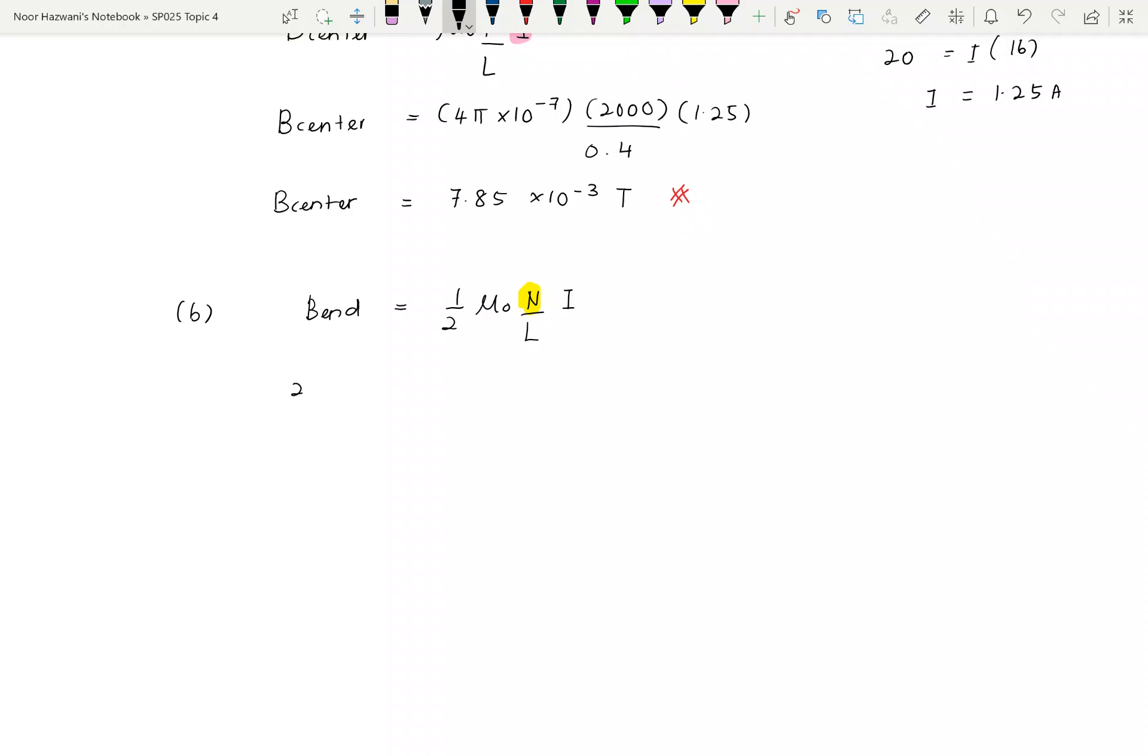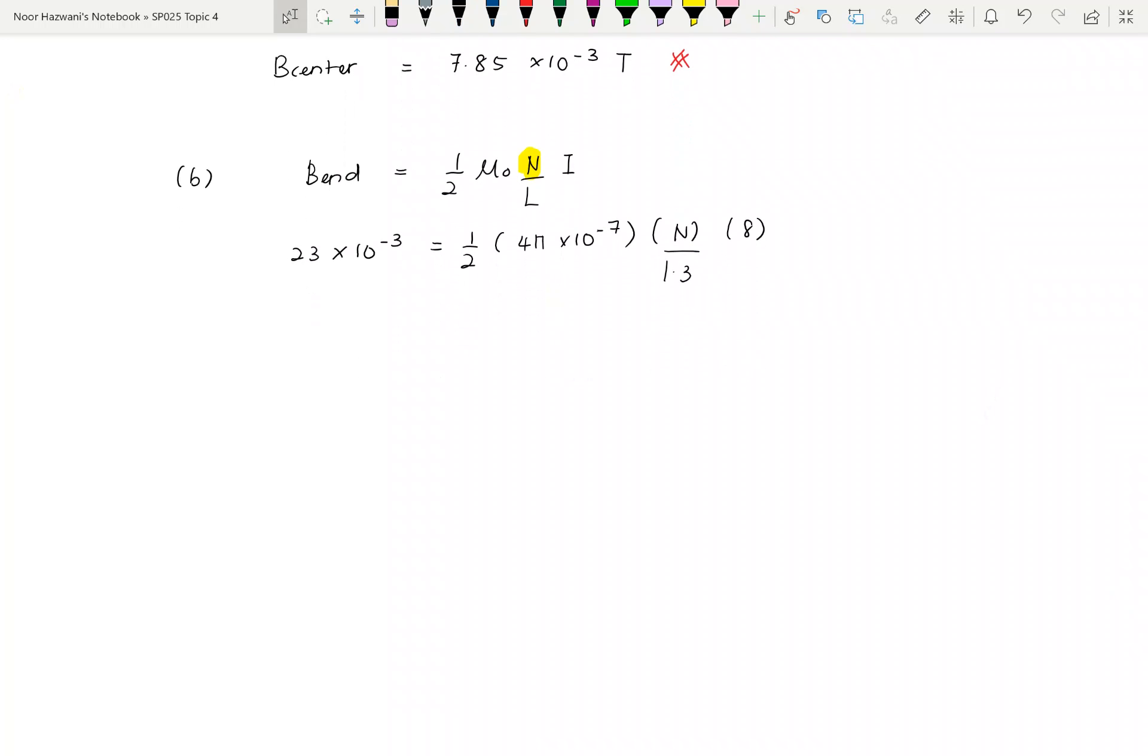BN given is 23 milli, so convert into SI. So time with prefix times 10 power of negative 3 and then half and then time with the constant 4 pi times 10 power of negative 7. Number of turns we don't know. Then you divide dengan length dia adalah 1.3 and then the current is 8. Rearrange equation. And then actually when you press your calculator, you will end up with the decimal number.